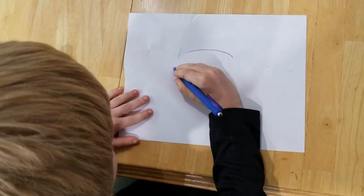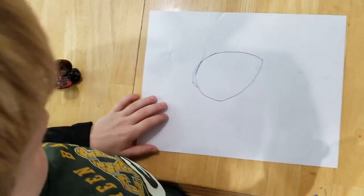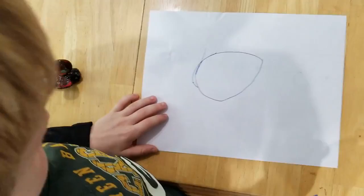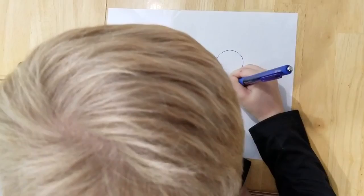First you start with kind of an oval shape, and then a little circle like an oval, then a tiny circle. Make sure it is this one.